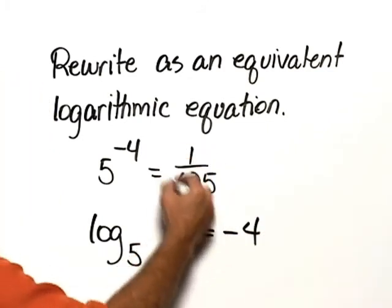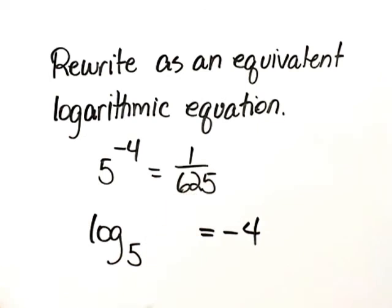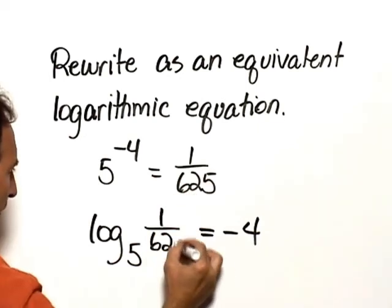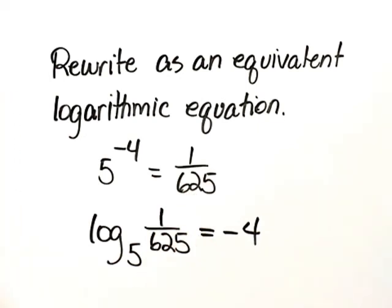This number is the number of which we take the logarithm. And so the equivalent logarithmic equation is log base 5 of 1 over 625 equals negative 4.